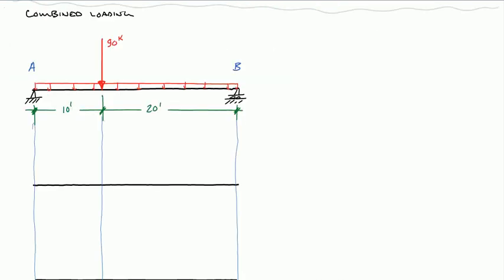For the combined loading case, I'll spare the reaction details — the reactions are simply the combination of the two previous problems. The horizontal reaction is 0. The vertical reaction at A, Ray, equals 90 kips, and the vertical reaction at B equals 60 kips. We'll use the same semi-graphical principles to construct the shear and moment diagrams. Starting with shear: the reaction on the left is 90 kips, so we go up to 90.